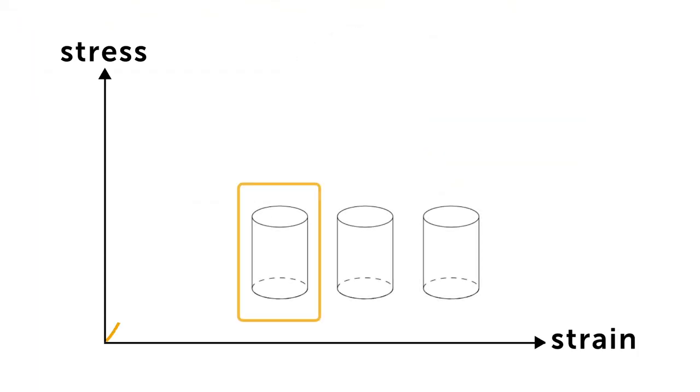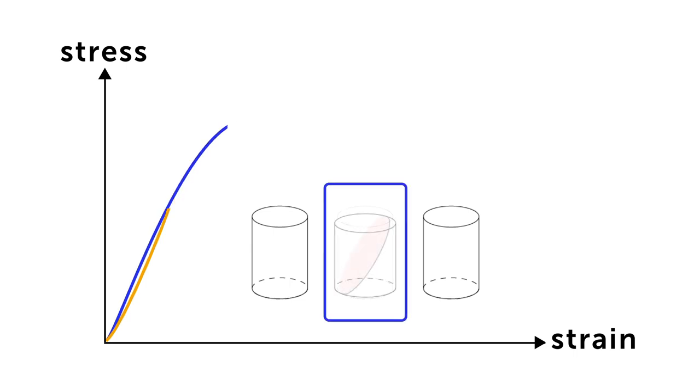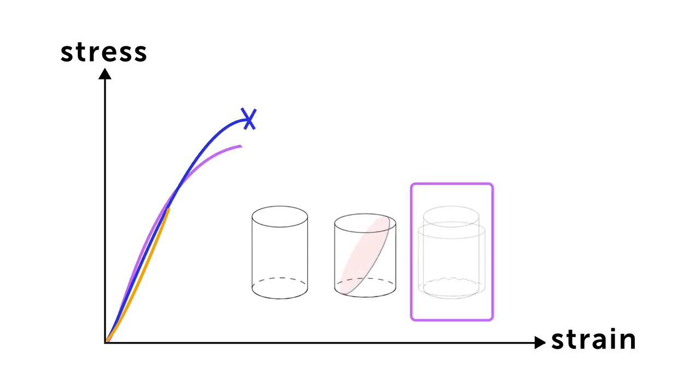The lithosphere can deform in many different ways depending on the pressure, temperature, loading rate and minerals involved. The lithosphere may deform elastically, it may fracture during an earthquake, or deform viscously, leaving intricate patterns in the rocks for us to analyze. The asthenosphere, however, deforms exclusively by viscous flow.